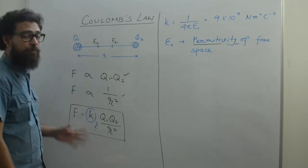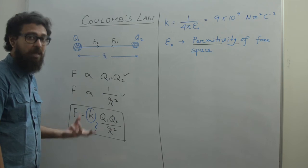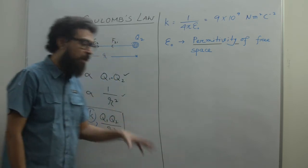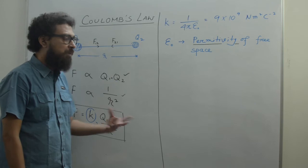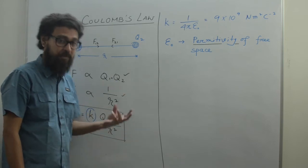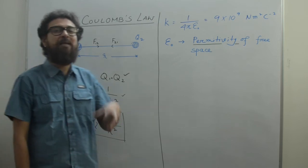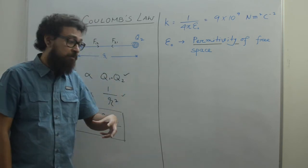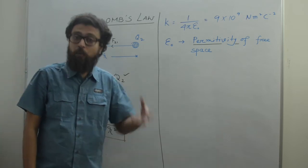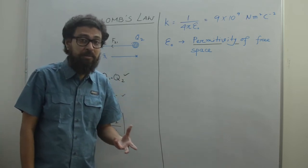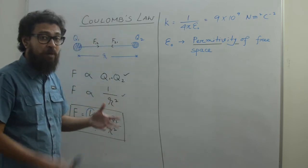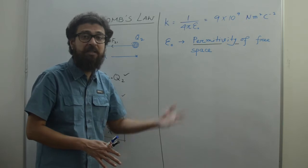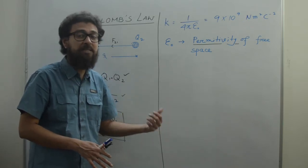Permittivity signifies how a medium is going to accommodate charges for their mutual force of attraction or repulsion. When we keep two charges in a particular medium like air or vacuum, we experience a certain amount of force, which will be different when we place those charges in benzene — a covalent liquid — or in water, which is a polar solvent. So different media give different forces. That is the measure of permittivity. We will learn more about permittivity in detail when we study the chapter on capacitance.